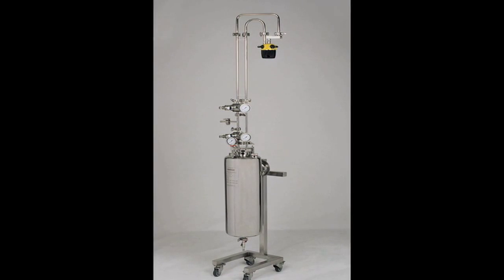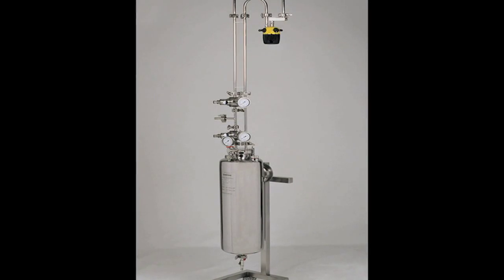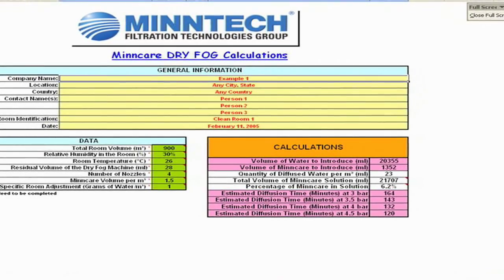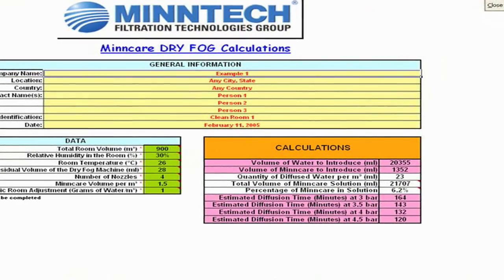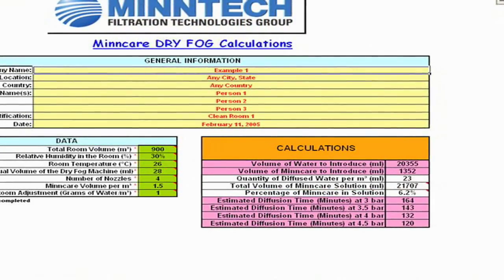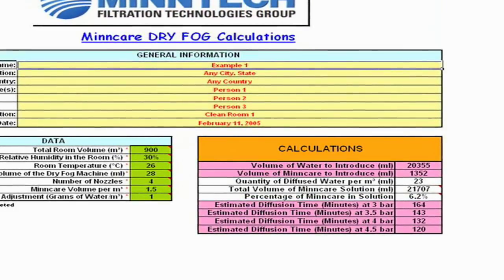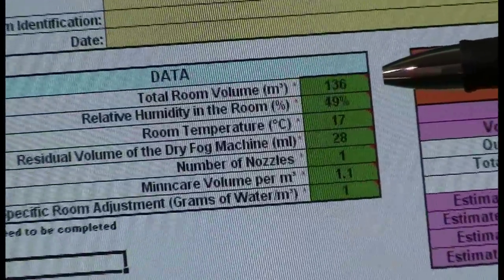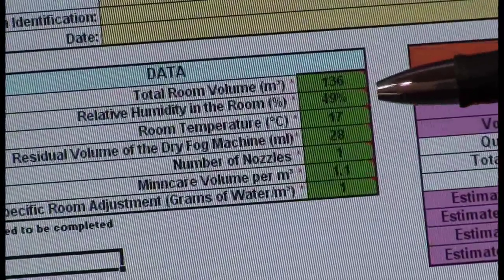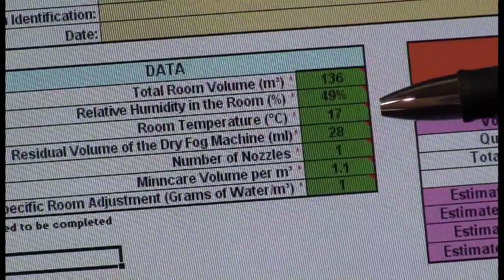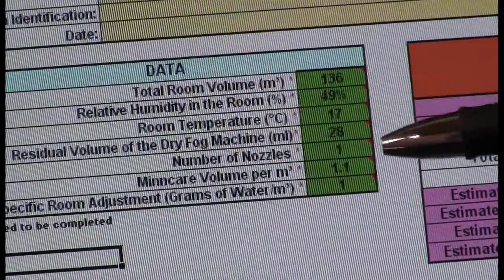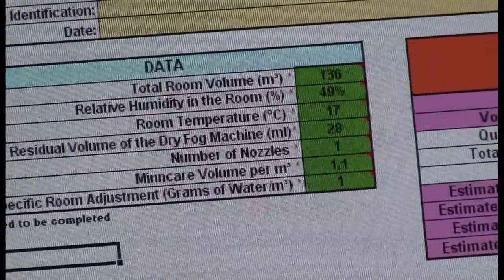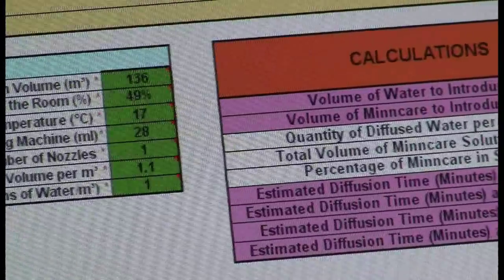Now that we've got our dry fog machine assembled, it's ready to calculate the parameters for your application. With this simple Excel based program that we supply, everything is done for you with the exception of putting in the inputs. So what we calculate here, total room volume in cubic meters or cubic feet converted to cubic meters, relative humidity and temperature at the time of fogging.